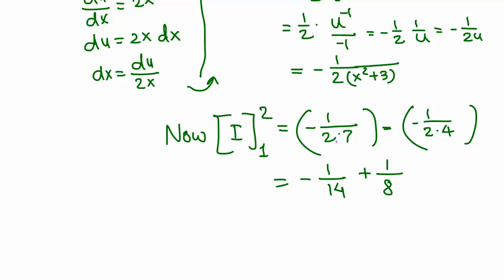Looking at 2 and 2, those are the common factors. 7 and 4 are relatively prime, so we multiply by 4 over 4 and 7 over 7. That gives us 56 as the common denominator. On the top, negative 1 times 4 is negative 4, plus 1 times 7 is 7. 7 minus 4 is 3 over 56. That's the final answer.